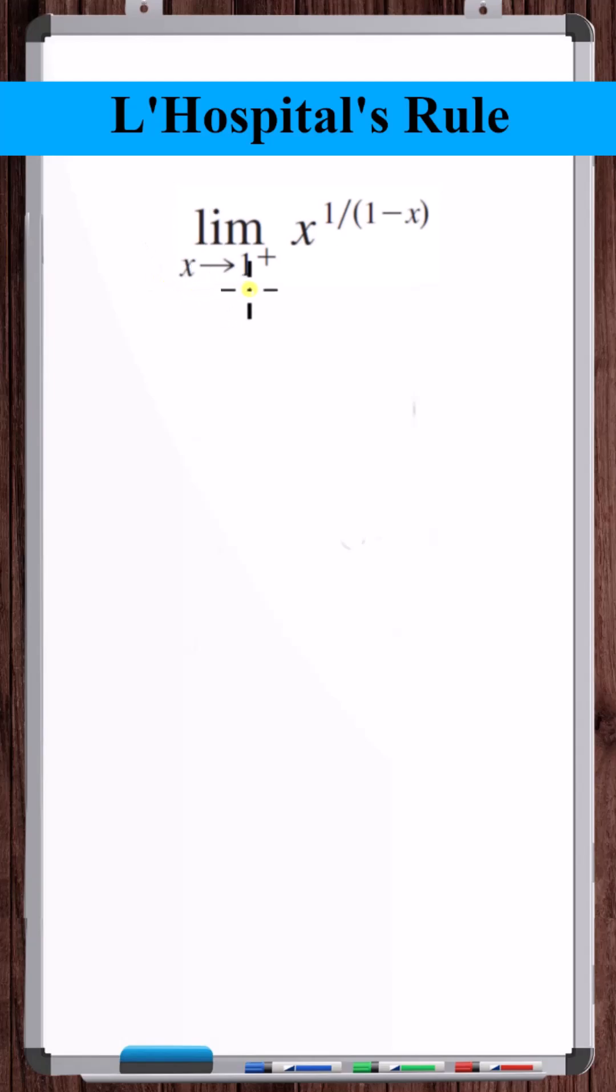What is the limit as x approaches 1 from the right of x to the 1 over 1 minus x power? Plugging in 1, x goes to 1. 1 over 1 minus x goes to 1 over 0, so it goes to infinity. 1 to the infinity power is an indeterminate form.